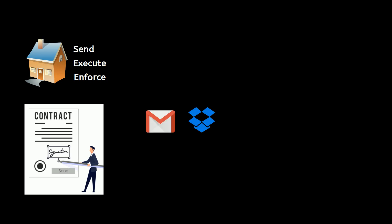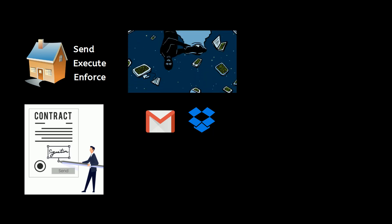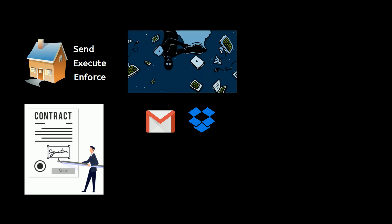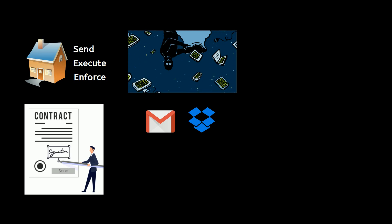Imagine you are a homeowner and you want to create a system that sends, executes, and enforces a rent contract with your tenant. You can, of course, attach the document to an email like a Gmail account, or share it on Dropbox. But here, you are trusting Google or Dropbox that they do not use this information in any way.